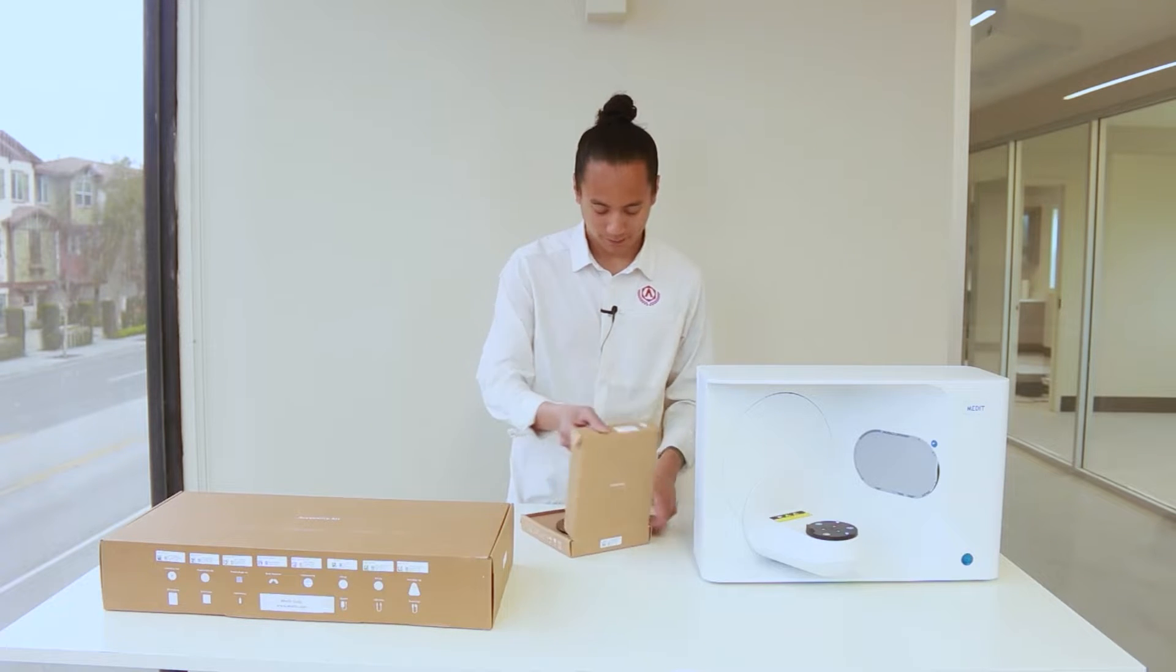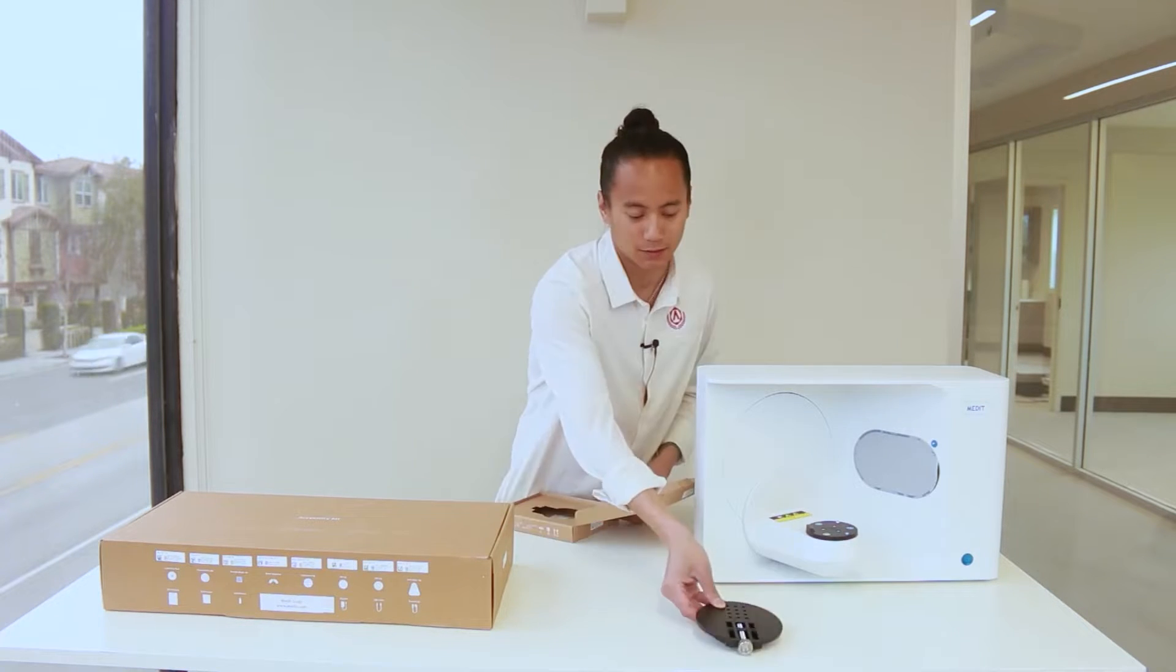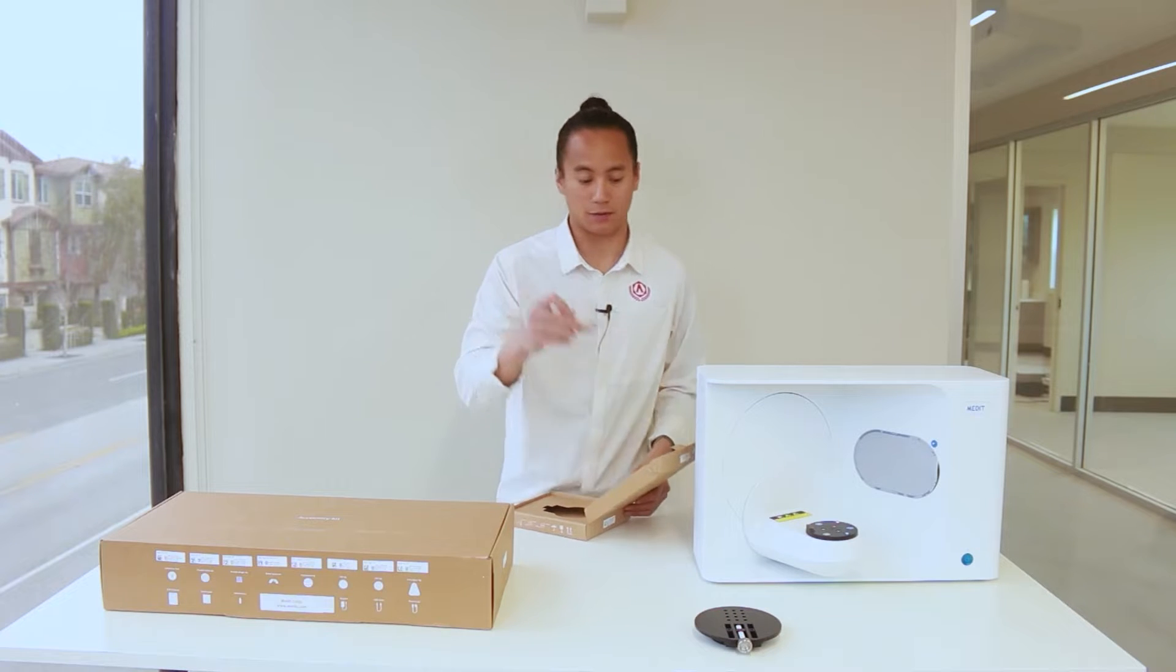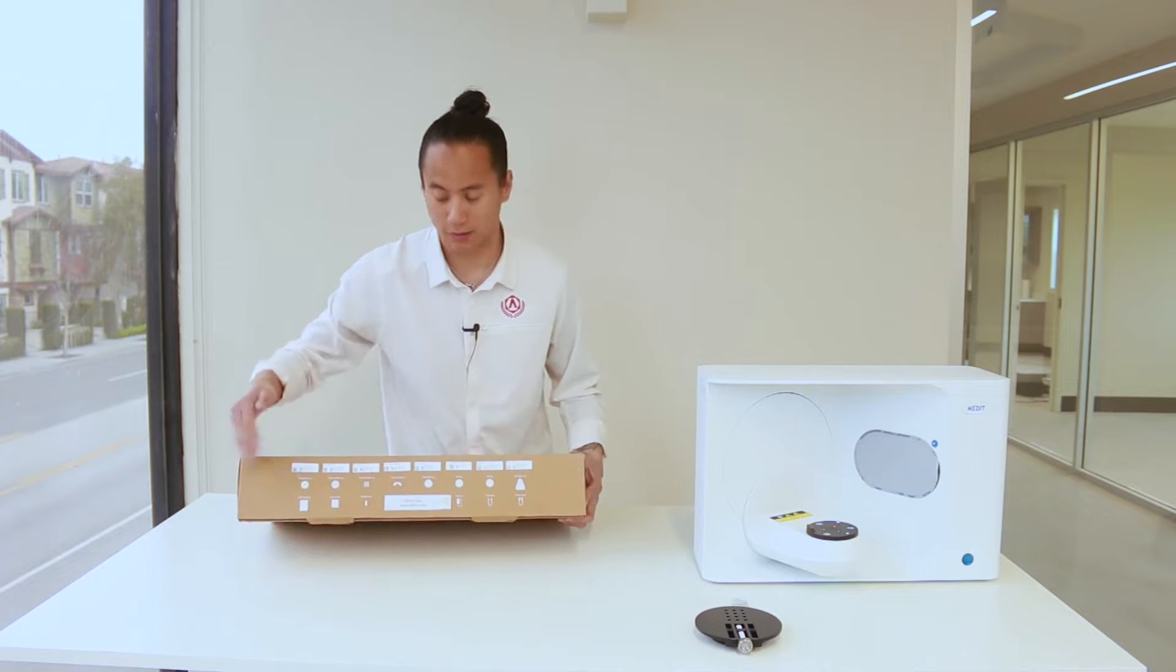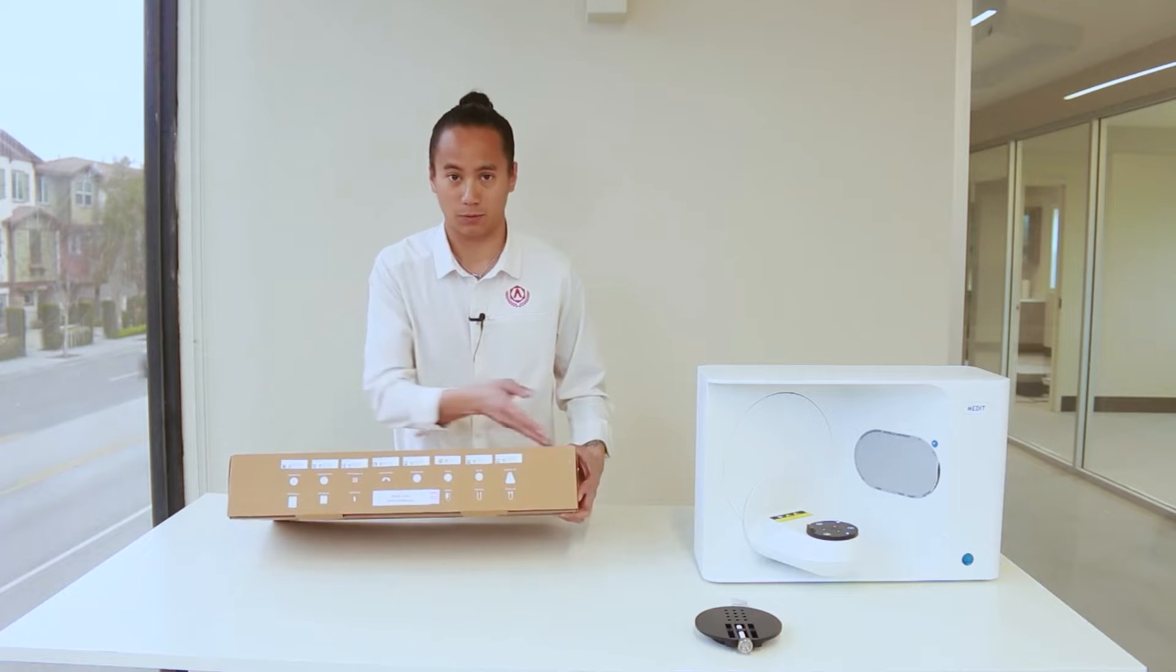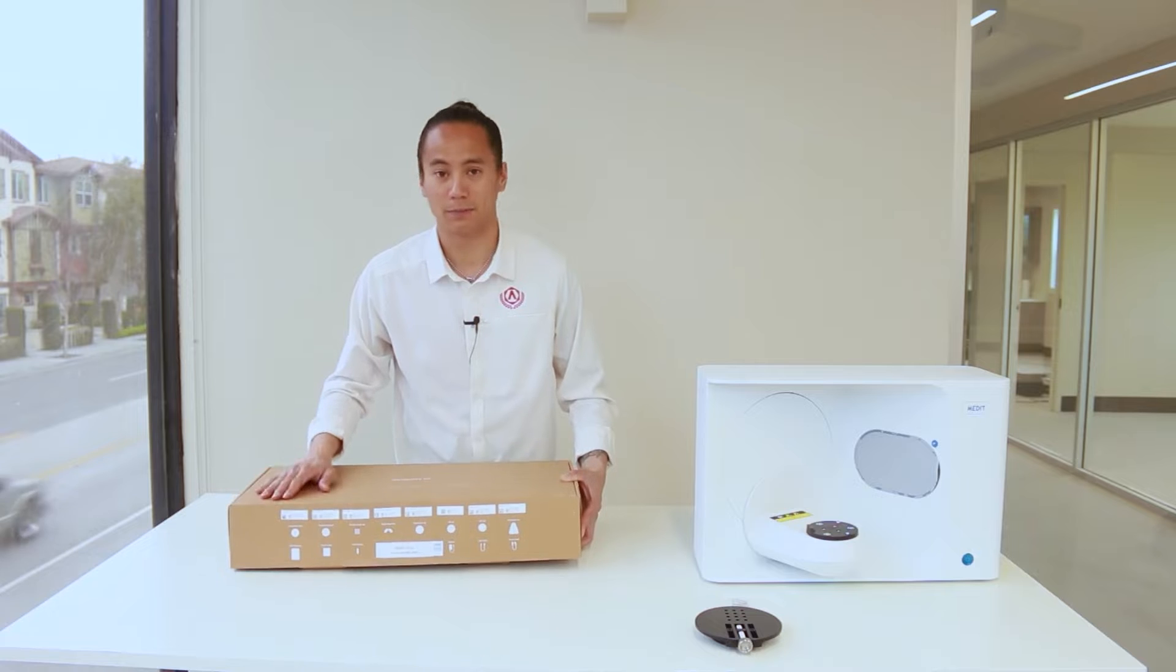The first accessory we're going to go through is the screw jig. Take this, place it up here. These are the packet of screws for the jig. Now, if we ever forget what each accessory is, the accessories box has a label for each individual item that's in the kit.